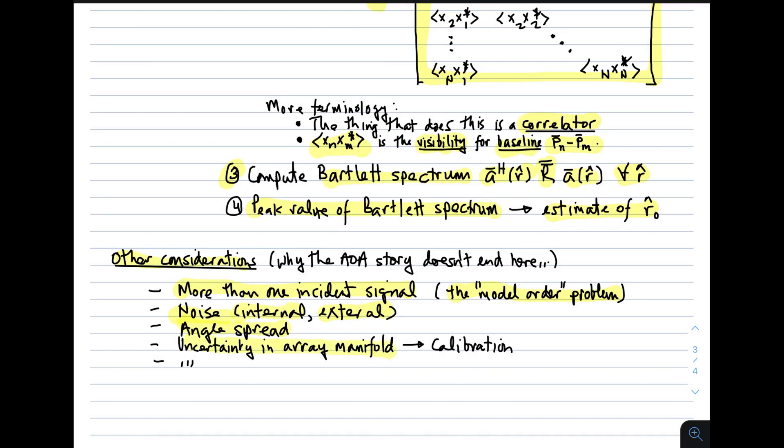Fourth, we can have uncertainty in the array manifold. Maybe our steering vectors are not right. Maybe we assumed we have certain steering vectors based on geometry, but once we put the array in the environment, the element positions are different or the gains are different from what we expected. One way of sorting that out is through calibration. Another way is by building that uncertainty into the formulation of the angle of arrival problem and perhaps solving for those uncertain quantities. There are other considerations, but these four constitute the most common things that need to be considered in practical systems.